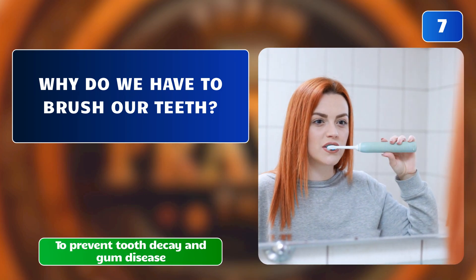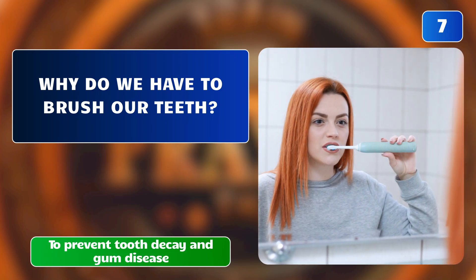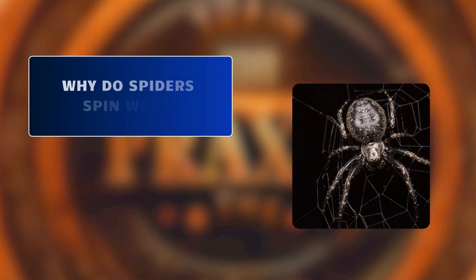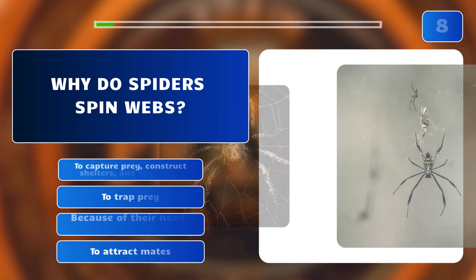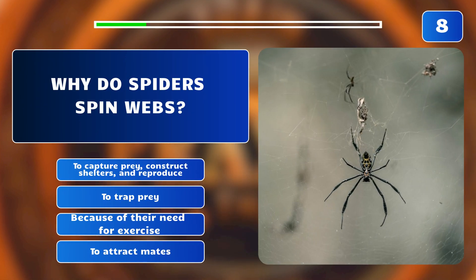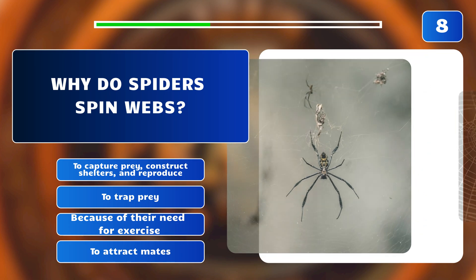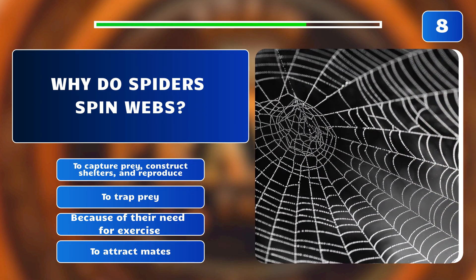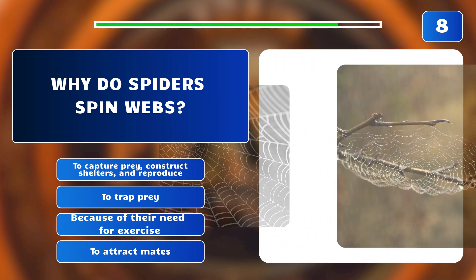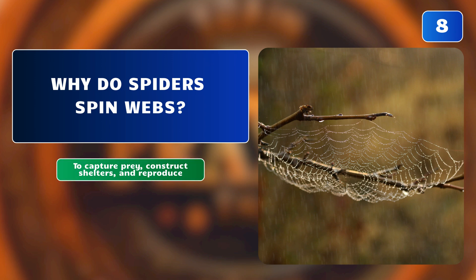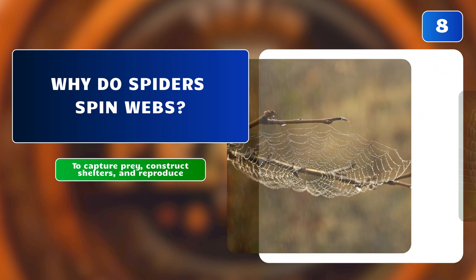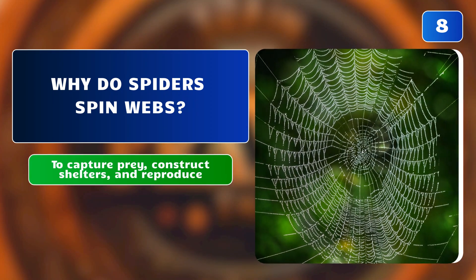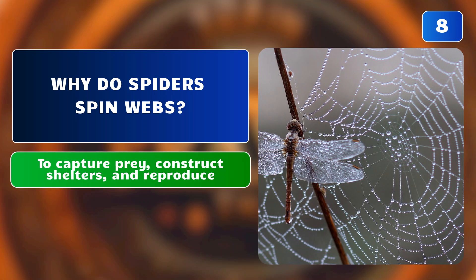Why do spiders spin webs? To capture prey, construct shelters, and reproduce? To trap prey only? Because of their need for exercise? To attract mates? The correct answer is: to capture prey, construct shelters, and reproduce. Spiders spin webs to capture prey, construct shelters, and reproduce.